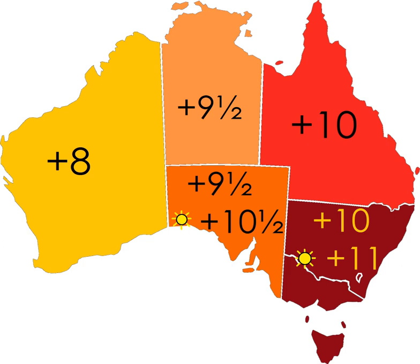Western Australia uses Western Standard Time. South Australia and the Northern Territory use Central Standard Time, while New South Wales, Queensland, Tasmania, Victoria, and the Australian Capital Territory use Eastern Standard Time.